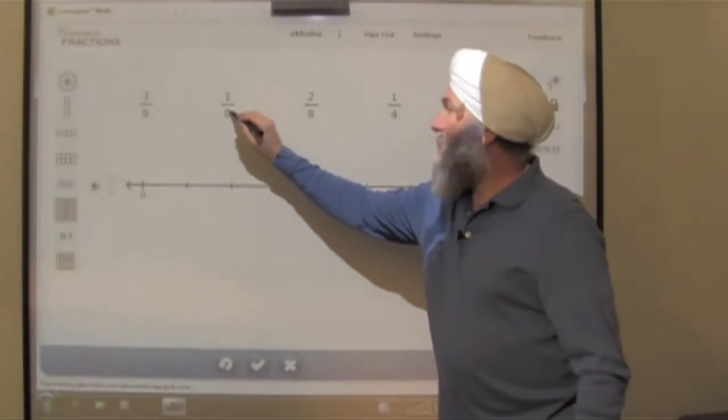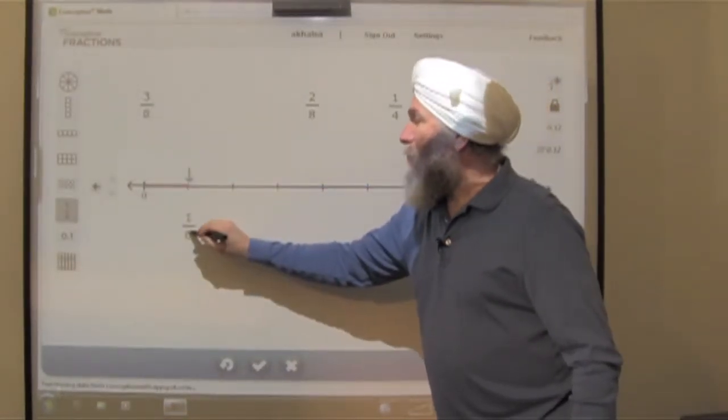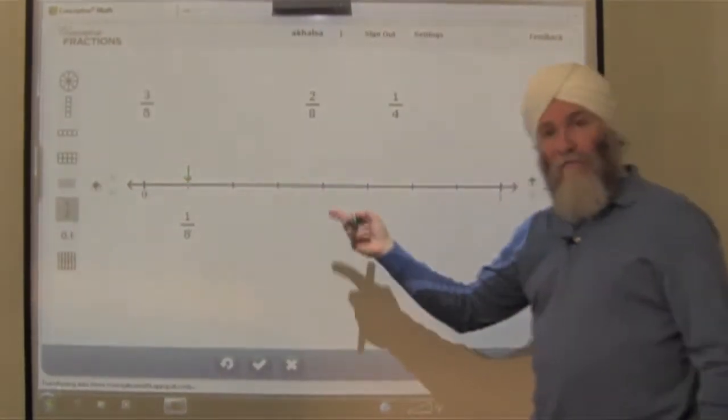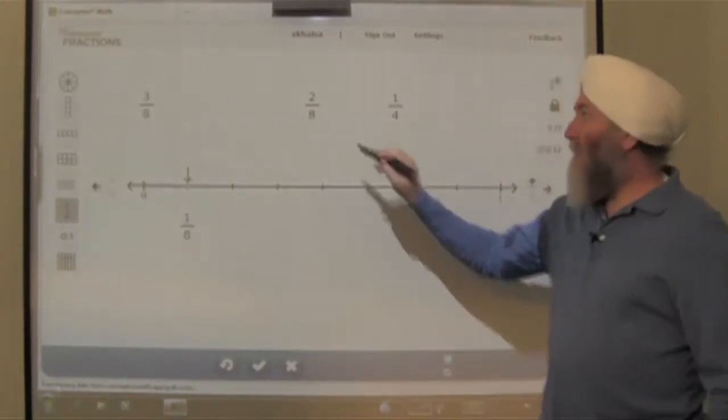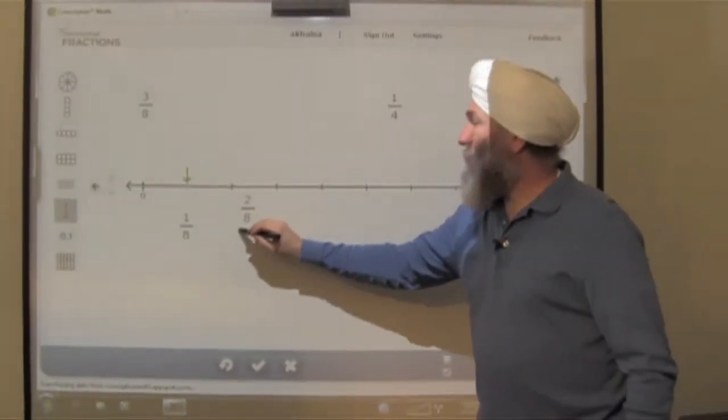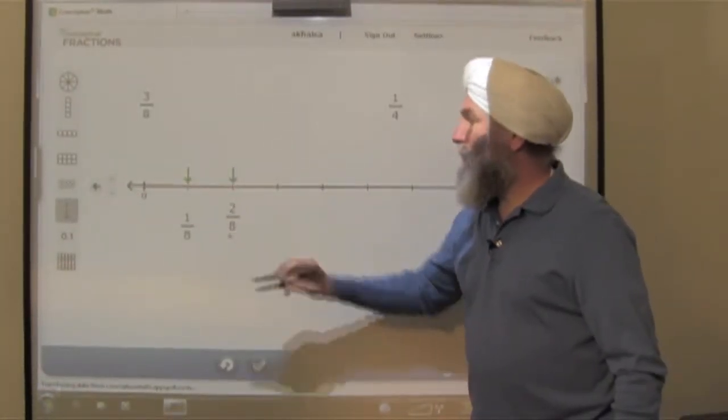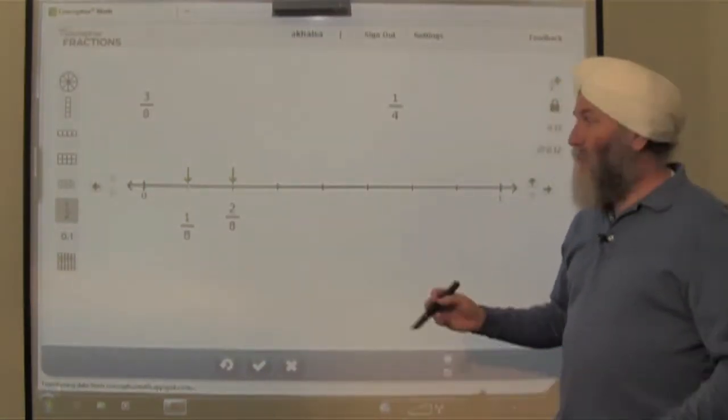So 1 eighth would accurately be placed where the first eighth of the number line is. And 2 eighths belongs right here. That's pretty straightforward.